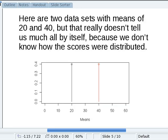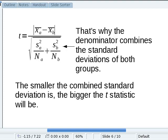So here are two data sets with means of 20 and 40, but that really doesn't tell us much by itself because we don't know how the scores are distributed. And because we don't know how the scores are distributed, we need to put in the standard deviations of both groups. That's in the denominator.